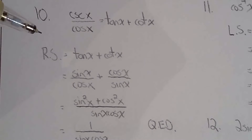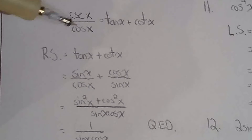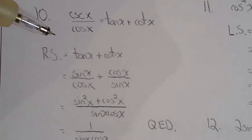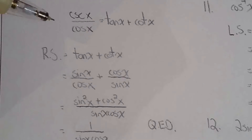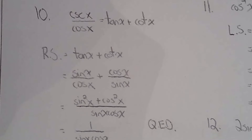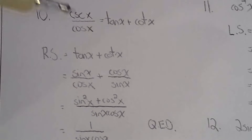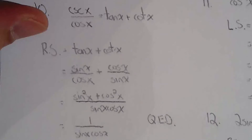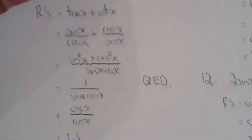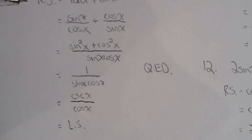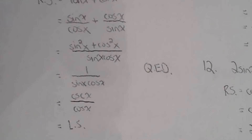Number ten is not a very good question for this handout, because I was able to prove this identity without using a single Grade 12 identity — no co-function identities, no compound angle formulas, no double angle formulas. This would be a great Grade 11 question, but not so much for a Grade 12 test.